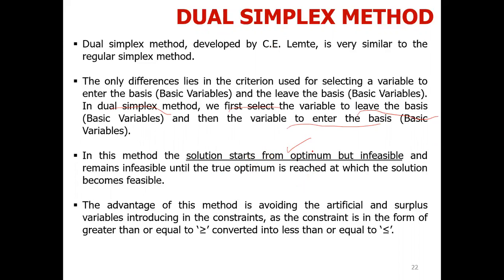The optimum condition will be fulfilled, but the problem is not feasible. So what do we do? We retain the optimum condition, meaning we have to keep the optimum solution, but we also have to move the problem from infeasible to feasible. In the end, we need to be both optimum and feasible.